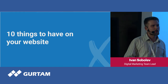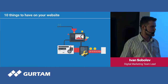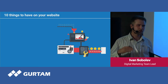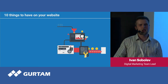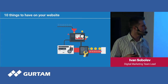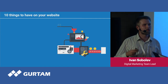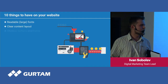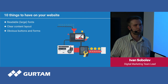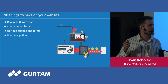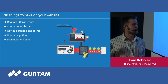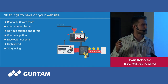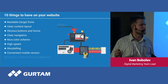Now we finally come to the 10 things to have on your website. Here is the overall list, and we will talk more deeply about some elements. The list includes: readable large fonts, clear content layouts, obvious buttons and forms, clear navigation, nice color scheme, high speed, storytelling, and convenient mobile version.